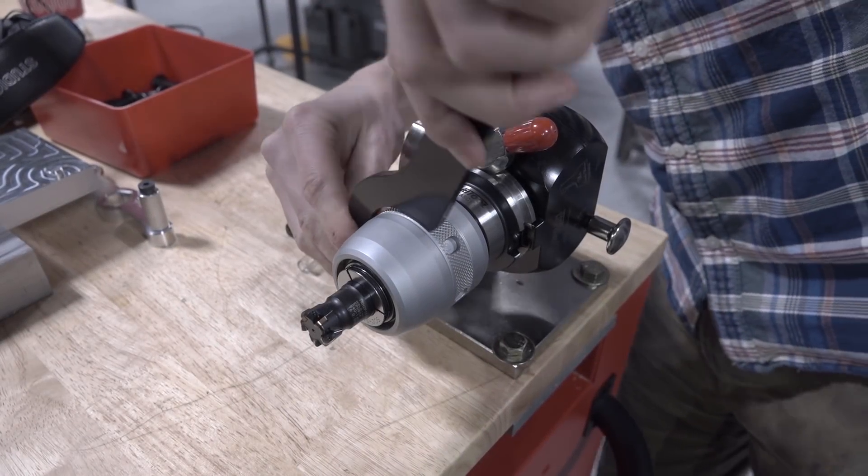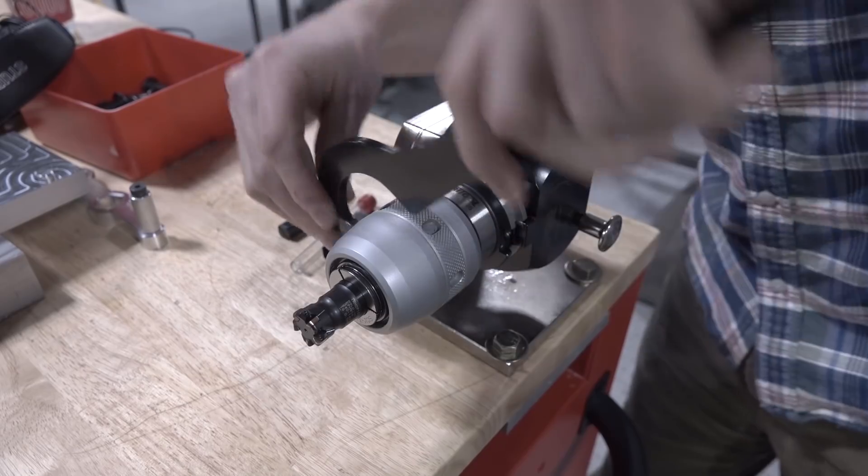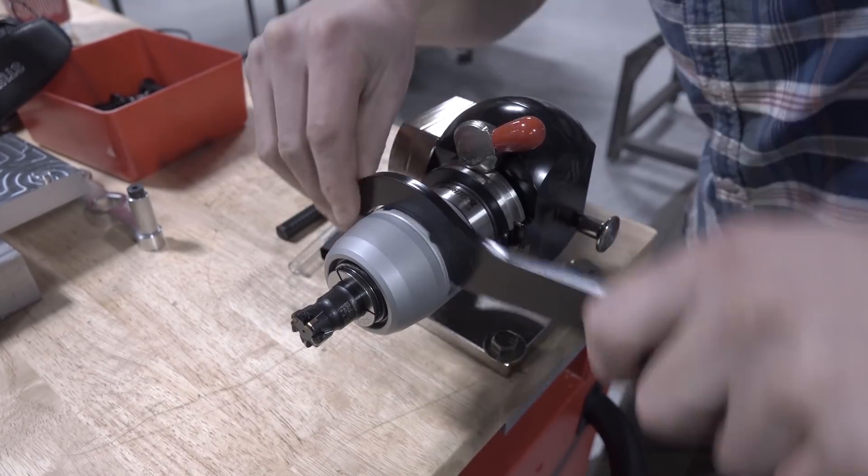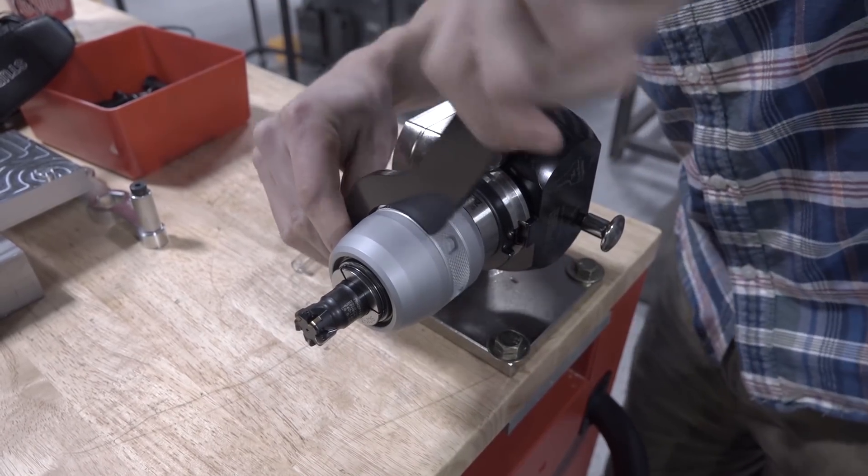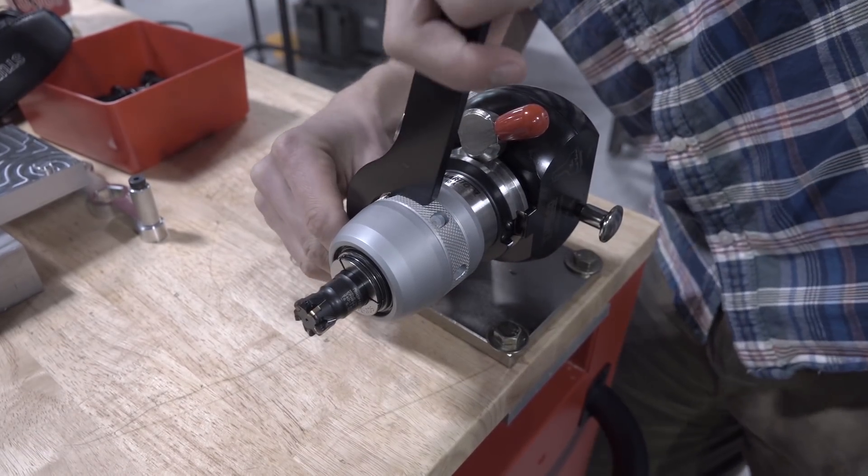Use the spanner wrench and you tighten this down until it stops. You'll feel it. And it's nice because there's not like a torque value where you kind of stop at a certain torque value. It literally just bottoms out.